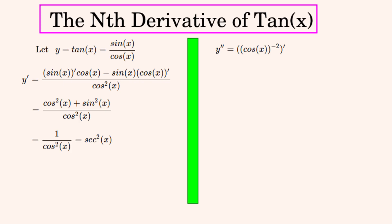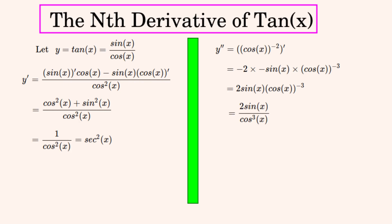Now to find the second derivative, we differentiate secant squared. Writing it in a form suited for the chain rule, the chain rule gives us a string of multiplied terms. The negative signs cancel, and we can write this out as a fraction where the sine function divided by one of the cosines gives us the tangent function in the numerator. So we write the second derivative as the product of tangent and secant. It turns out these two trig functions are all we need to express any of the derivatives.